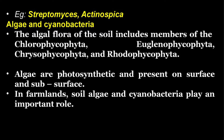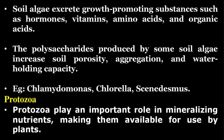Examples of actinomycetes include Streptomyces and Actinospica. The algae flora of the soil includes members of the Chlorophycophyta, Euglenophycophyta, Chrysophycophyta, and Rhodophycophyta. Algae are photosynthetic and present on the surface and subsurface. In farmlands, soil algae and cyanobacteria play an important role. Soil algae excrete growth promoting substances such as hormones, vitamins, amino acids, and organic acids. The polysaccharides produced by some soil algae increase soil porosity, aggregation, and water holding capacity. Examples include Chlamydomonas, Chlorella, and Scenedesmus.